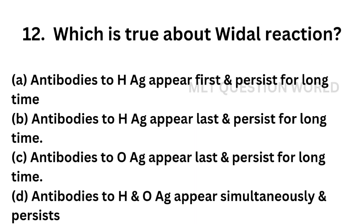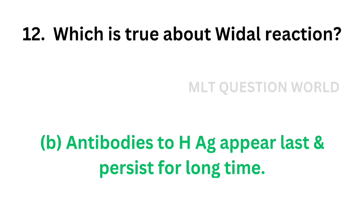Question number 12. Which is true about Widal reaction? Option A, antibodies to H antigen appear first and persist for a long time; Option B, antibodies to H antigen appear last and persist for a long time; Option C, antibodies to O antigen appear last and persist for a long time; Option D, antibodies to H and O antigen appear simultaneously. The correct answer is Option B: antibodies to H antigen appear last and persist for a long time.